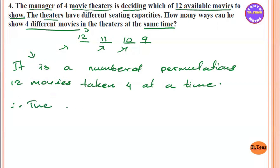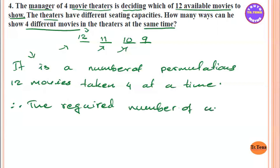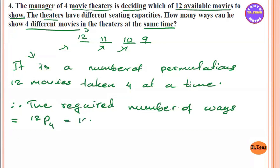The required number of ways. So we have to take 12B4, which equals 12 × 11 × 10 × 9, which gives us 11880.